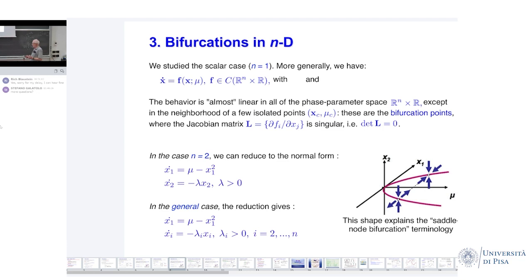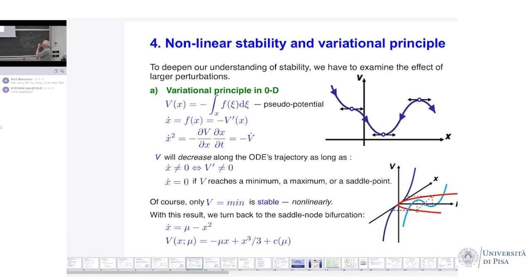For nonlinear stability and variational principles: in the scalar case, we didn't really need to do anything because we could just look at the graph of f, and clearly wherever f was negative, the flow would go into the fixed point. But this is not going to be so any longer in more general situations. So we have to re-examine the effect of larger perturbations. In the scalar case, always start with the simplest case.